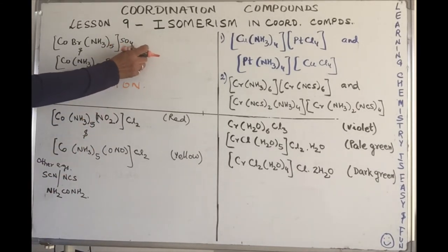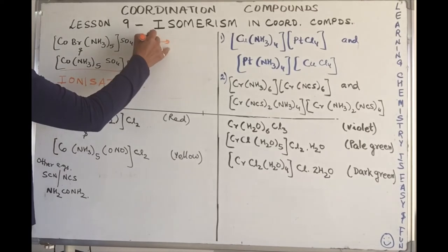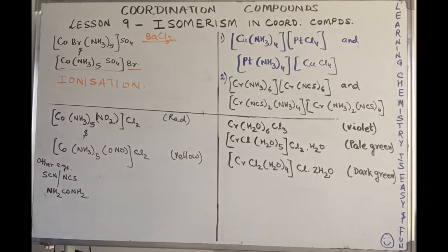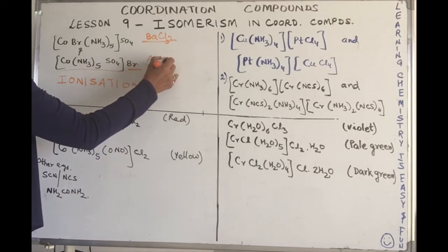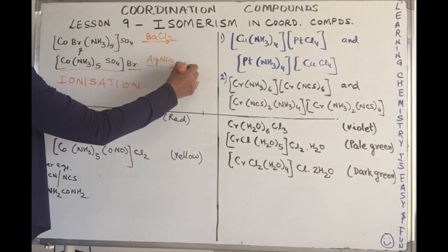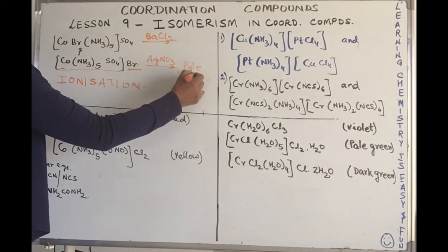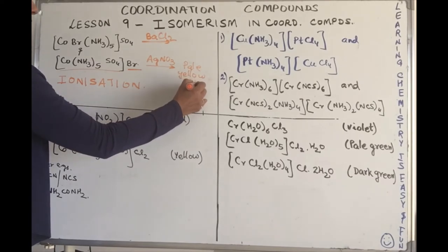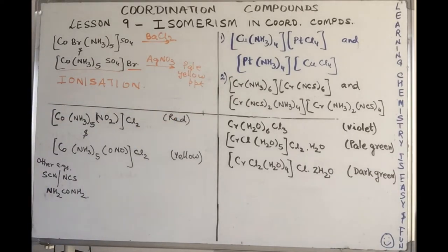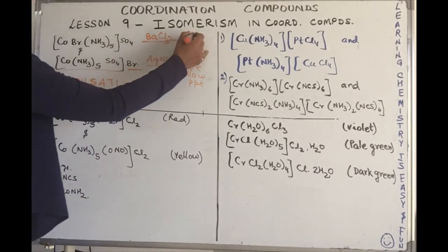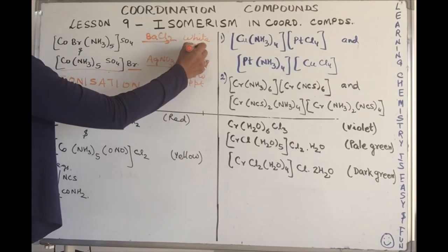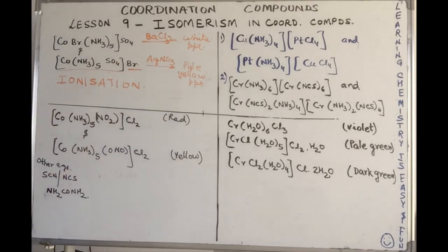Here this is, we said that this will give you the test with barium chloride, it will give you a white precipitate, it's a violet colored compound. On the other hand, this will give you a test with silver nitrate solution giving you a pale yellow precipitate which is soluble in excess of ammonium hydroxide, and this was a red compound. Can you relate to the marker color that I used? See how colors help you to remember things.